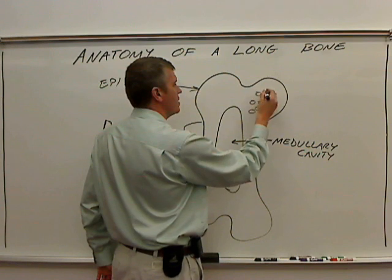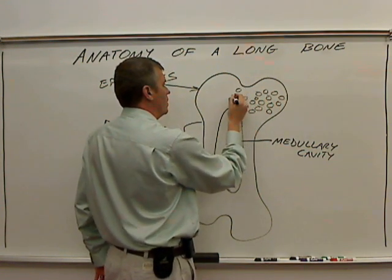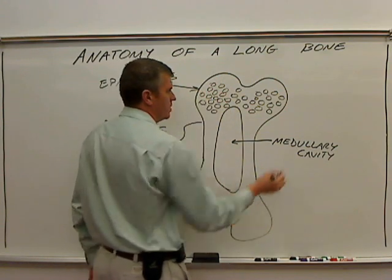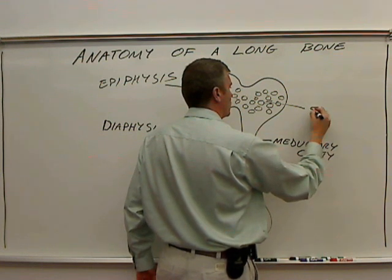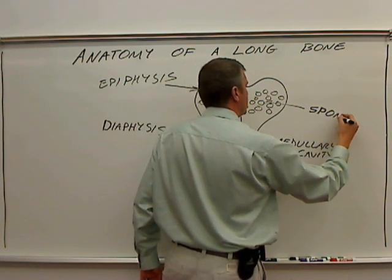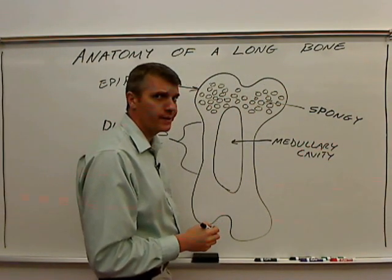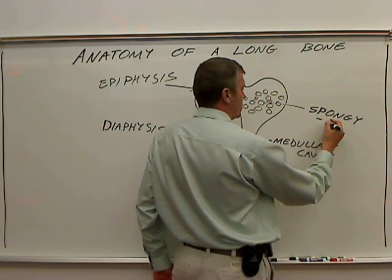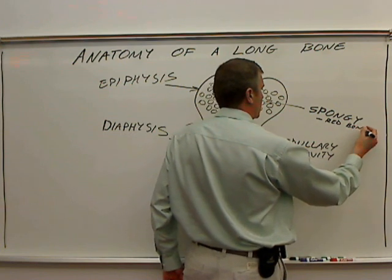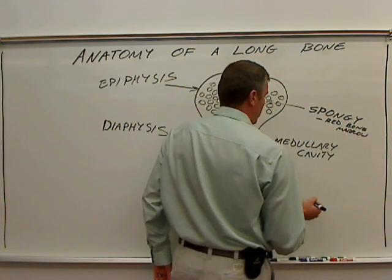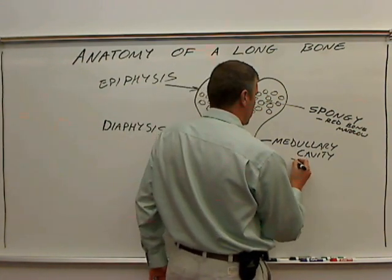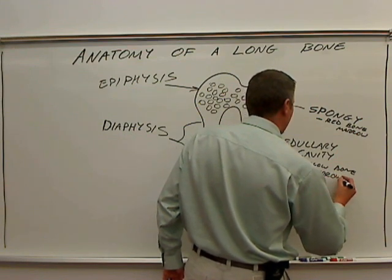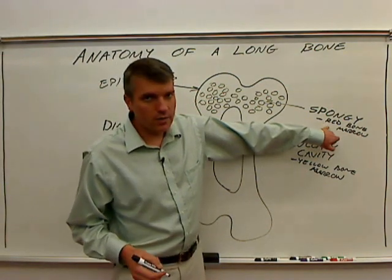Up here especially at the ends of the long bones, you'll see what's called trabecular bone, or spongy bone. Spongy bone is at the ends of the long bones. Another thing you might want to know about spongy bone is that inside the spongy bone is where you find red bone marrow. And in the medullary cavity, this is where you find yellow bone marrow. You might remember from the introduction that red bone marrow is where blood cells come from.